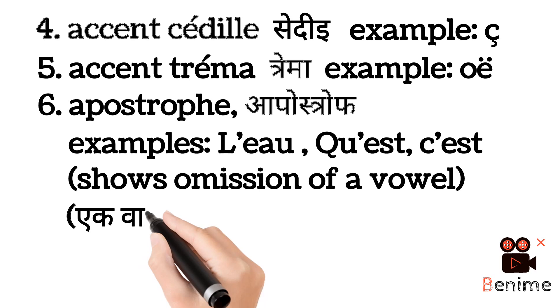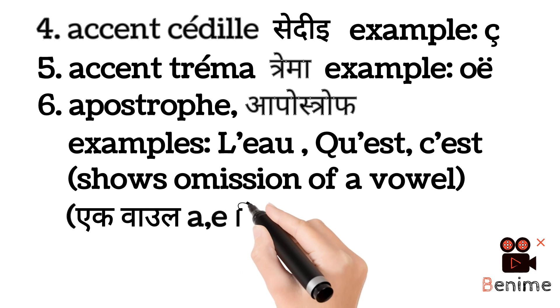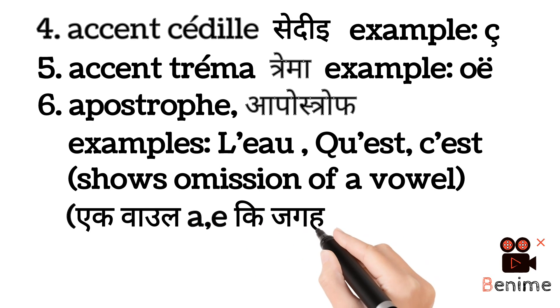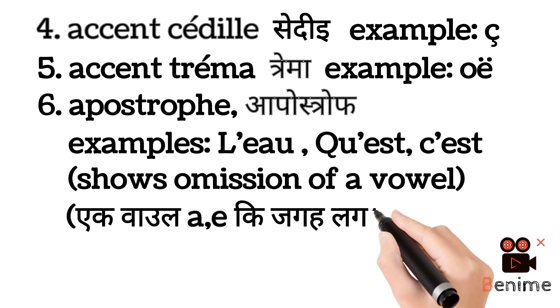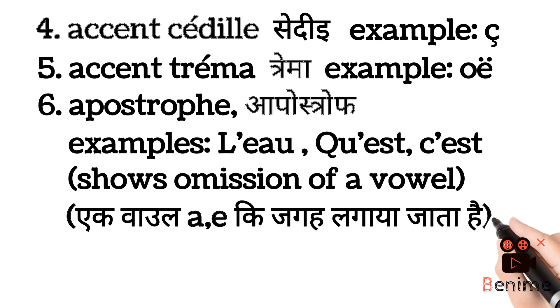A की जगह या e की जगह लगाया जाता है — it is used in place of a or e (indicating vowel elision).